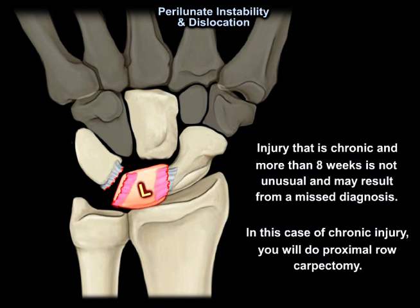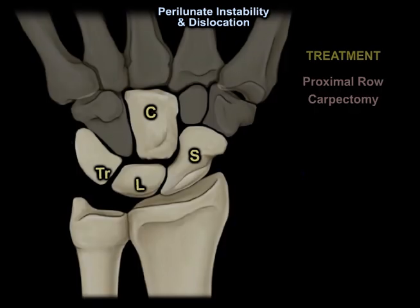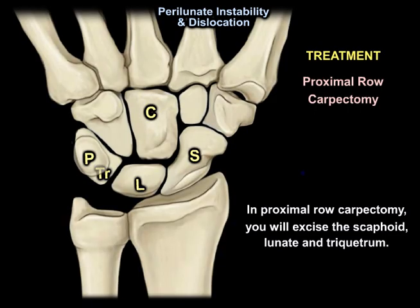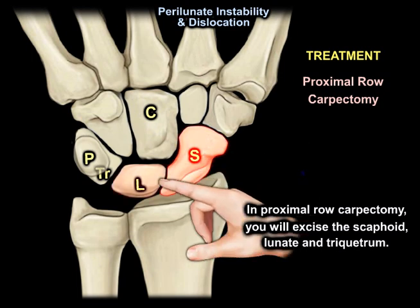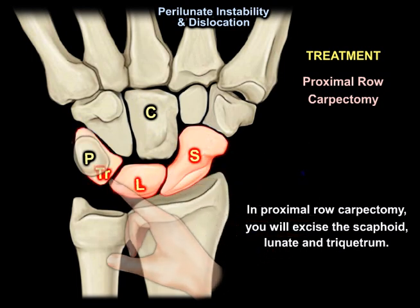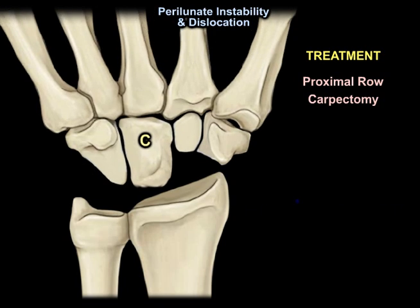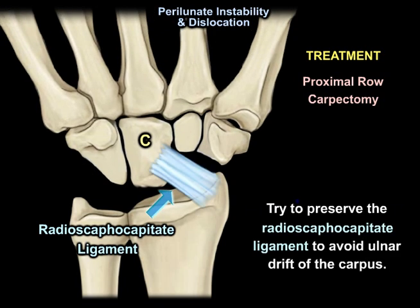Injury that is chronic — more than eight weeks — is not unusual and may result from a missed diagnosis. In this case of chronic injury, you will perform proximal row carpectomy: excising the scaphoid, the lunate, and the triquetrum. You will try to preserve the radioscaphocapitate ligament to avoid ulnar drift of the carpus.